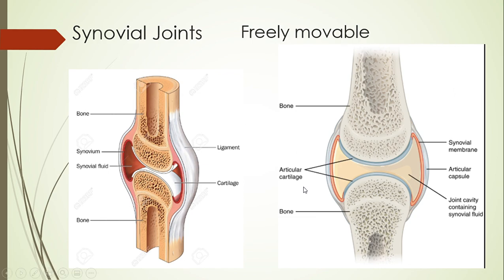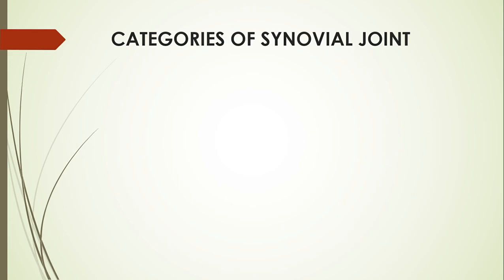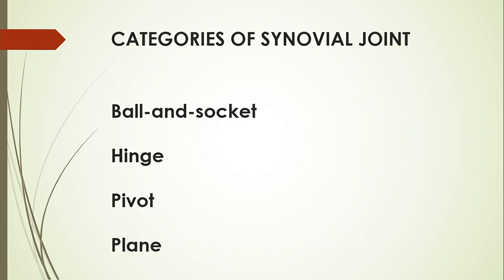Remember, this image you need to know as a biological drawing. This is a generic synovial joint — we obviously have more specific forms of it. There are four main categories of synovial joint that we want you to understand. There are two additional ones — the saddle and the ellipsoid — but you don't need to worry about those. We're only focusing on these four: ball and socket, hinge, pivot, and plane.